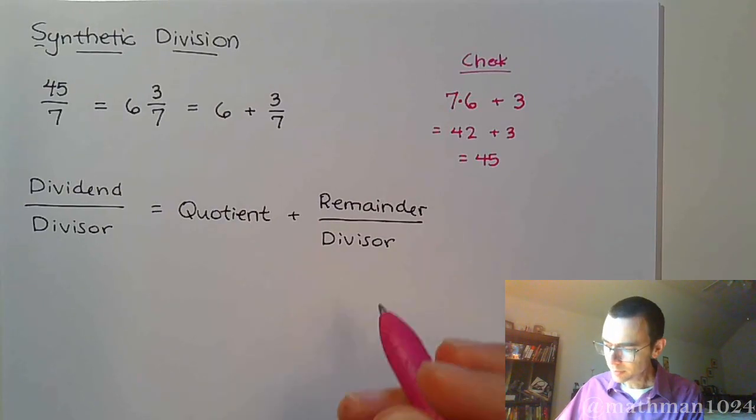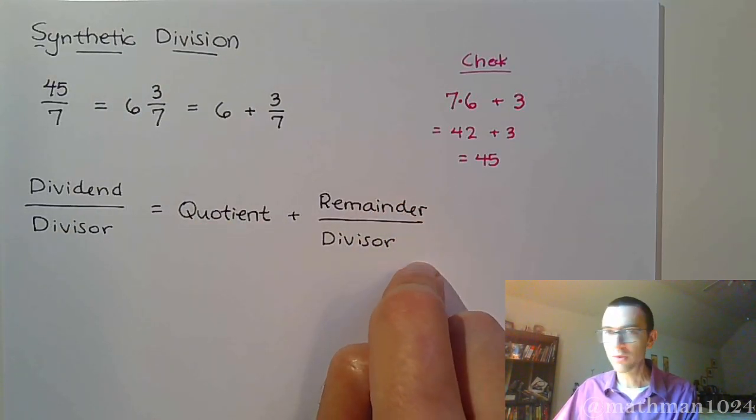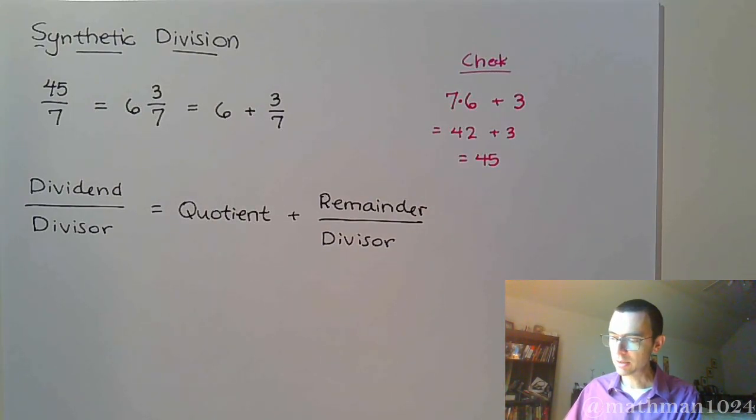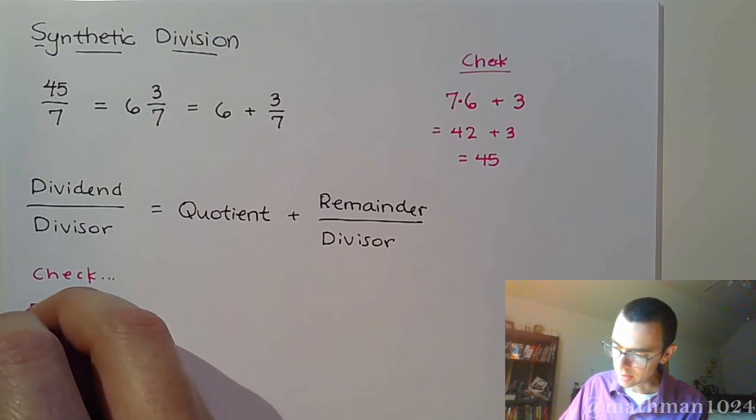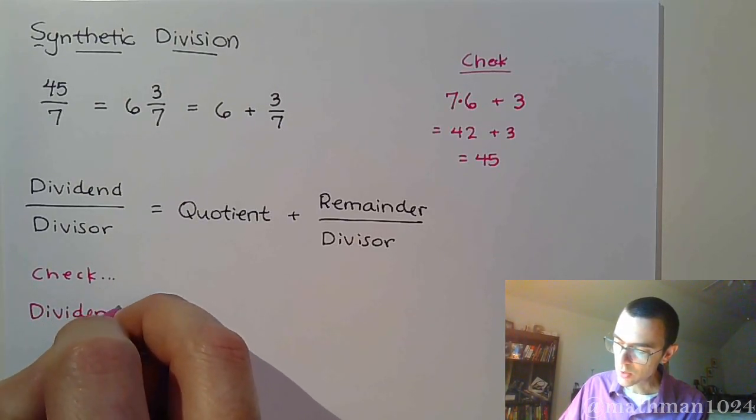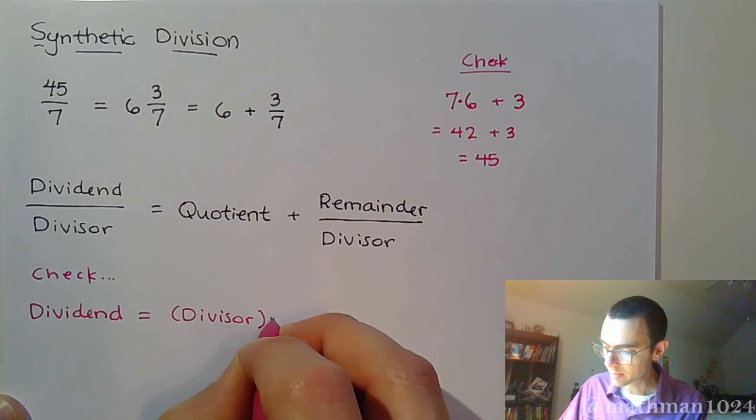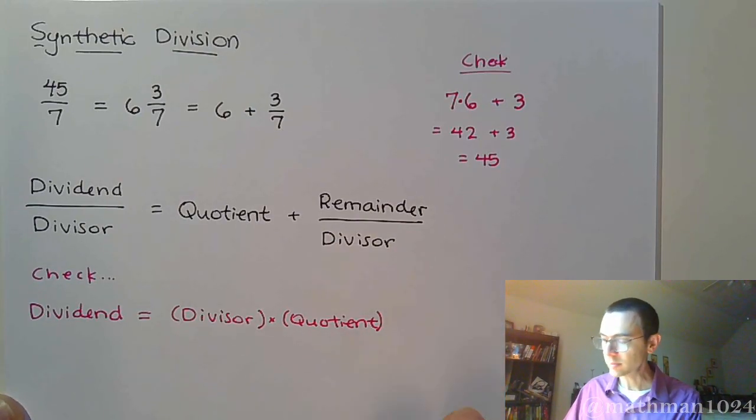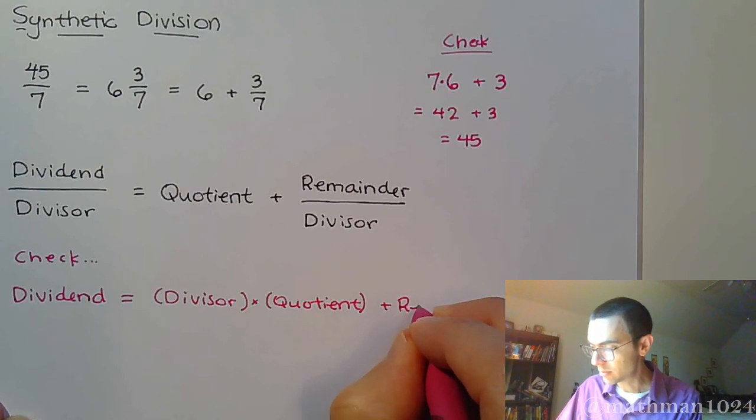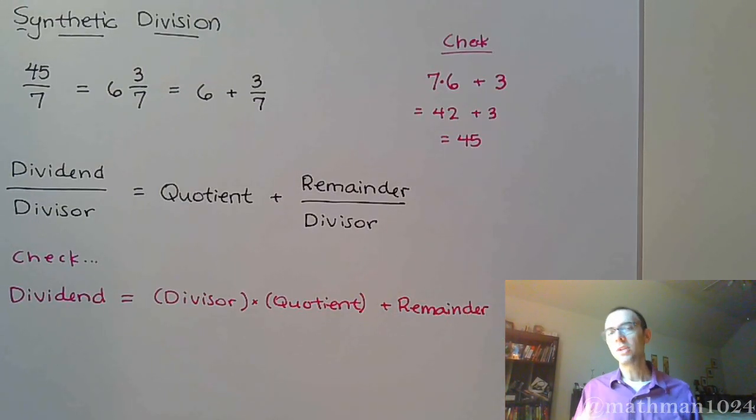So we have something very similar going on here. If I have a division problem, this is what it's going to look like. You're going to write your quotient plus your remainder over the divisor if you have to check. So the checking aspect of this would say that your dividend is supposed to equal your divisor times your quotient plus your remainder. That's how you would check that.